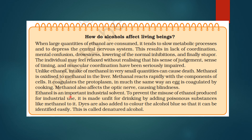Ethanol is an important industrial solvent. Since it is used as a solvent in industry, to prevent employees and staff from misusing it by drinking, they add poisonous substances like methanol to it so that people do not consume it. Dyes are also added to color the alcohol blue so that it can be easily identified. This is called denatured alcohol.